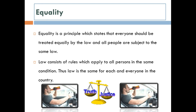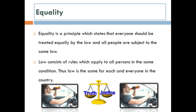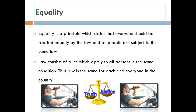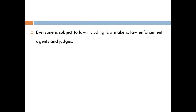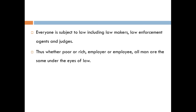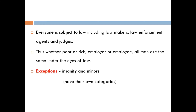Looking at our first example of the law which limits the amount of alcohol one can take before driving, everyone is subject to that law. We can never say some people are special and are allowed to drink loads and then drive, as driving under the influence puts everyone's lives at stake. So everyone is subject to law, including lawmakers, law enforcement agents, and judges. Whether poor or rich, employer or employee, all men are the same under the eyes of the law. Exceptions to this principle are insanity and minors, who have their own categories under law in which they are tried.